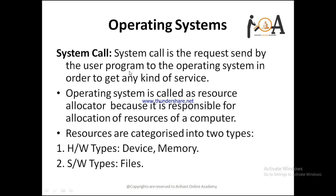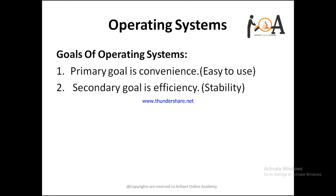A system call is a request sent by a user program to the operating system in order to get any kind of service — such as displaying information on screen, allocating memory, allocating or requesting a file. These services are provided by the operating system. That is why the operating system is called a resource allocator, as it is responsible for allocation of resources. Resources are mainly of two types: hardware types (devices and memory) and software types (files).